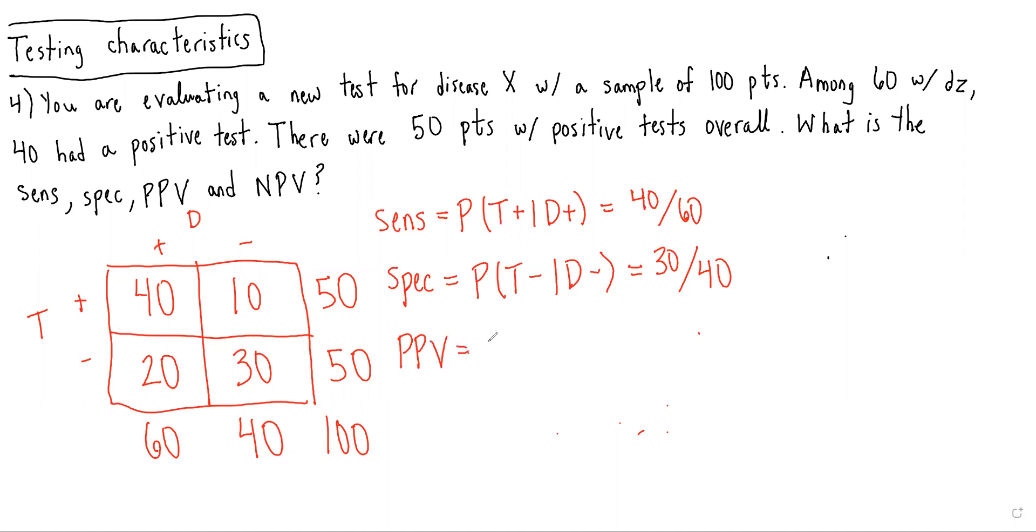PPV is the probability of having the disease given a positive test result, which in this case is equal to 40 over 50.